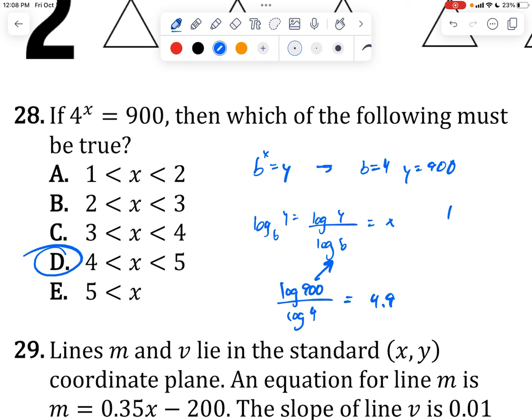You can also just say, okay, I know 4 to the 1 is 4, 4 to the 2nd is 16, 4 to the 3rd is 64, 4 to the 4th is 256, 4 to the 5th is, I think, 1024. So the number has to be between, exponent has to be between 4 and 5.